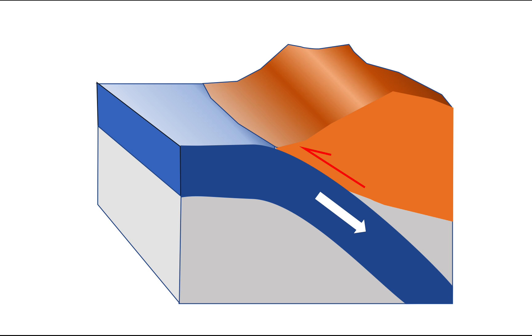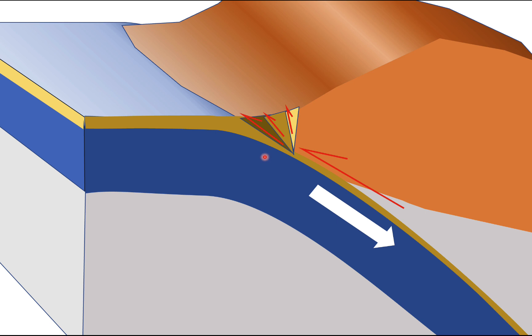And the other time that you get thrusting in these convergent settings is in this region here what's called the accretionary prism. So if you have large enough ocean basins then you end up with a layer of sediment on the top of the ocean floor. And as that goes down, as the ocean plate subducts, that sediment gets scraped off in a series of thrust faults.